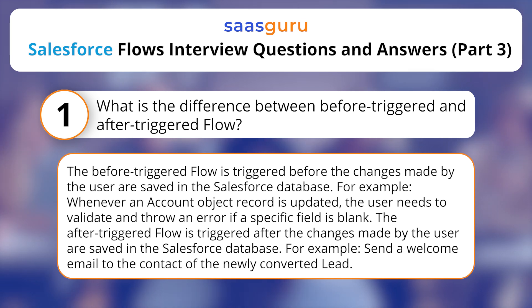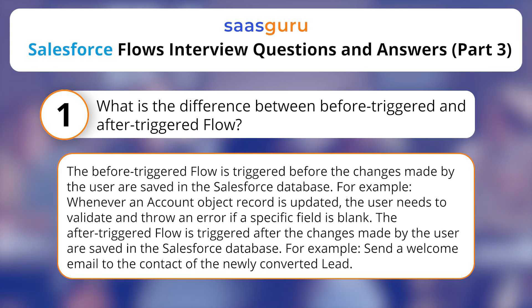For example, whenever an account object record is updated, the user needs to validate and throw an error if a specific field is blank. The After Triggered Flow is triggered after the changes made by the user are saved in the Salesforce database.